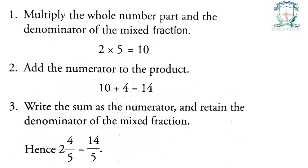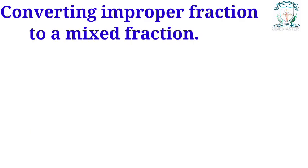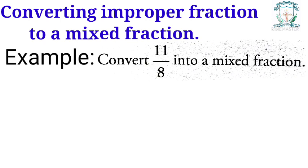Step two: add the numerator to the product — that is, ten plus four equals fourteen. Step three: write the sum as the numerator and retain the denominator of the mixed fraction. Hence, two and four by five can be written as fourteen by five.